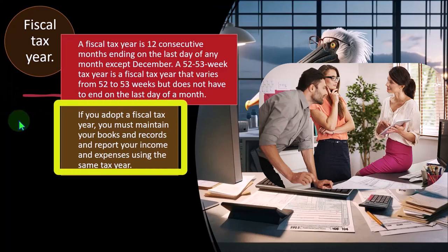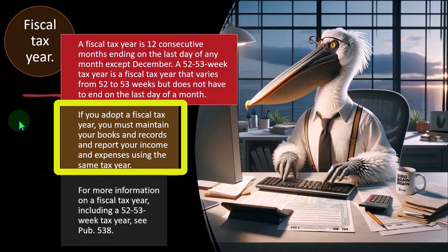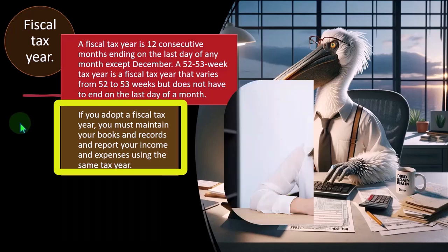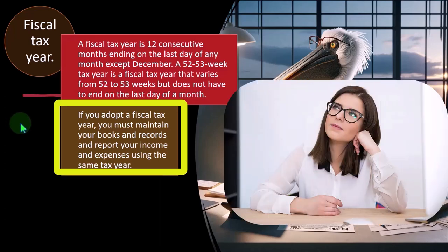If you adopt a fiscal tax year, you must maintain your books and records and report your income and expenses using the same tax year. Your books should match up with what is being reported on the tax return. Otherwise, it looks like you're doing something for tax reasons that doesn't line up with your books. You would think that if you had a year other than the calendar year, it's because you have a natural business year end that doesn't coincide with the end of the calendar year.